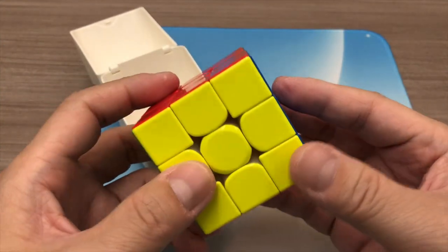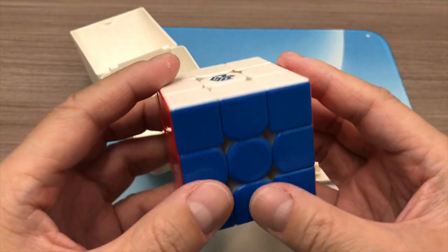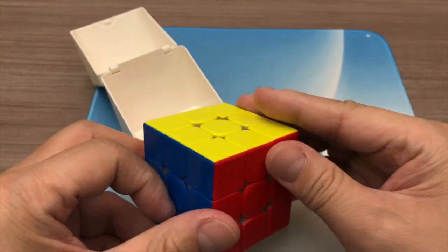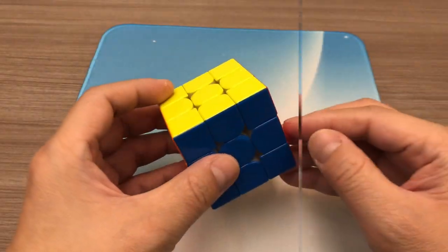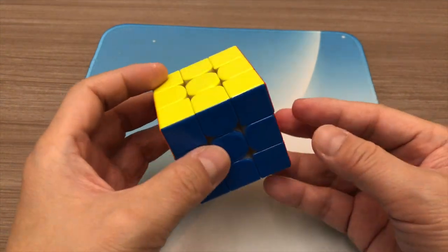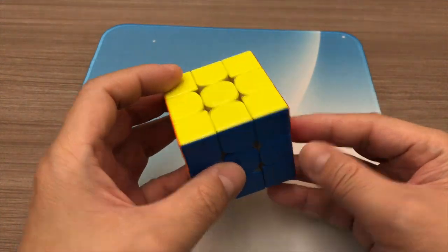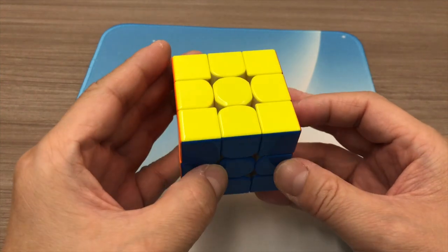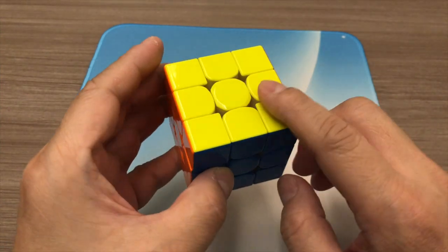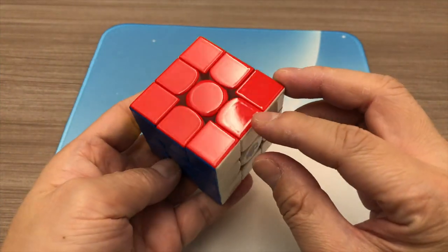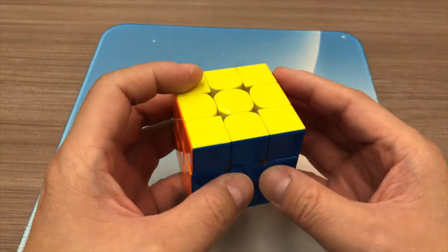There we have it, the GAN 14 maglev puzzle cube. Let's check out the puzzle cube. It weighs about 70 grams and this cube is UV coated, which gives it a shiny surface. Let's try out the cube.